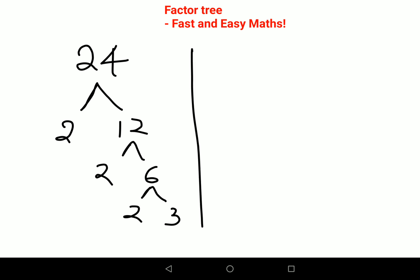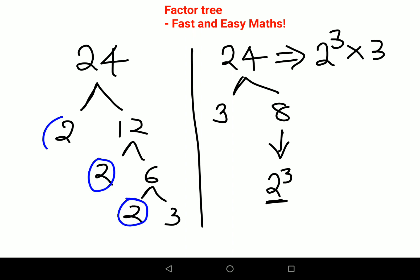But there is another method to do this which is: 24 I can do as 3 into 8, and this 8 can be directly written as 2 cube. So then I can say the factors for 24 are nothing but 2 cube into 3. And if you look over here there are 1, 2, and 3 twos, so here also you would have written 2 cube into 3. So this and this is same.